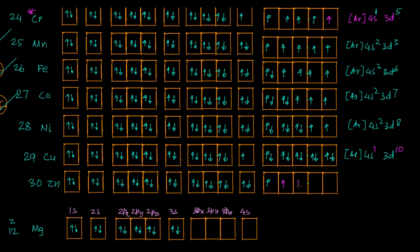For zinc, 3d remains completely filled and the next electron fills up the 4s orbital. Normally all these elements are called d-block elements because we are filling the d block. But for zinc, it is the s orbital that got filled, not the d orbital. So zinc, though it is in the d-block position in the periodic table, is not considered a true d-block element - but it is still studied along with d-block elements.